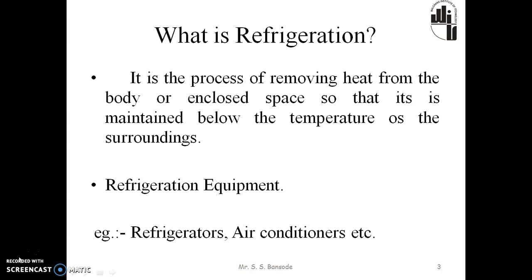The heat withdrawn from the refrigerated space is finally rejected to the atmosphere, which acts as a natural receiver of heat. It should be noted that heat commences to flow into the refrigerated body from surroundings as soon as the temperature of the body falls below that of the atmosphere. This constitutes an undesirable heat gain by the refrigerated body, and it is reduced considerably by protecting the refrigerated space with insulating materials. Examples are refrigerators and air conditioners which follow the refrigeration process.